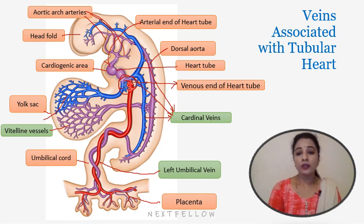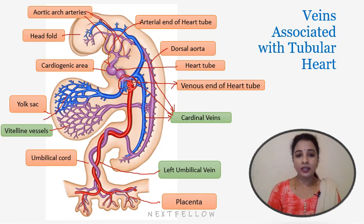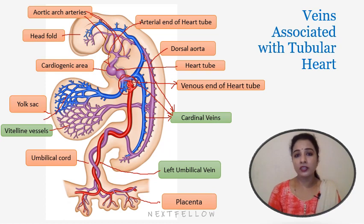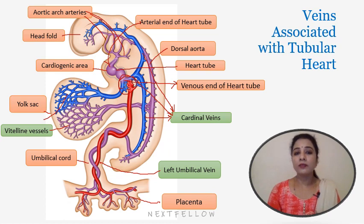Sub-cardinal veins form the inferior vena cava, renal veins, and gonadal veins. Supra-cardinal veins form the inferior vena cava again, as well as intercostal veins, and the azygos and hemi-azygos veins. In summary, the vitelline veins develop into the portal system associated with the gastrointestinal tract; the cardinal system forms the caval system — superior vena cava, inferior vena cava, and their tributaries; and the umbilical system degenerates after birth, with only the left umbilical vein patent before birth, carrying well-oxygenated blood.